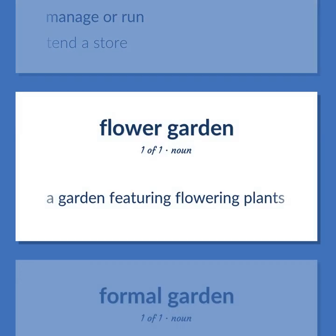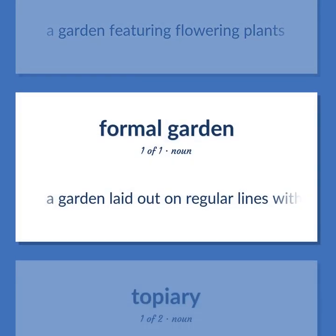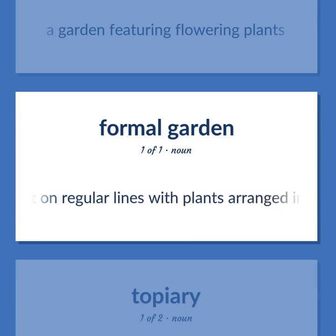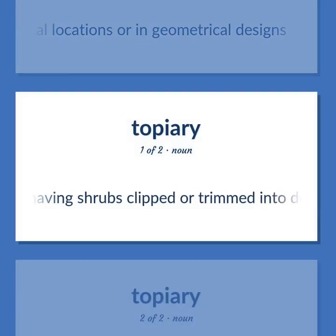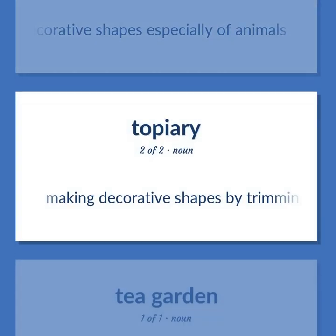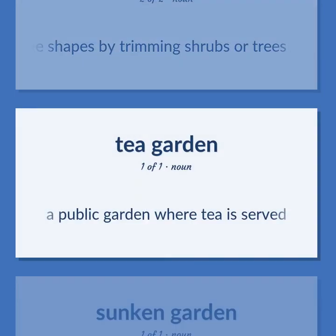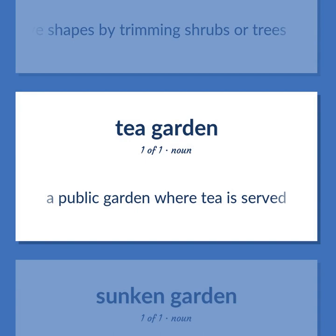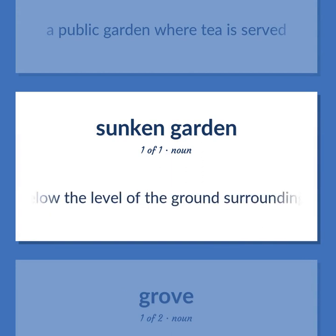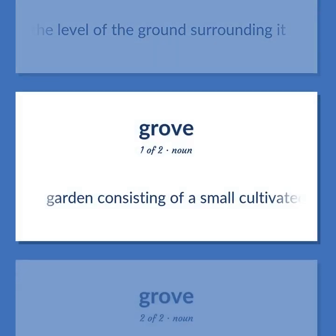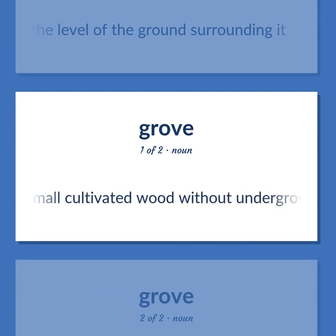A garden featuring flowering plants. A garden laid out on regular lines with plants arranged in symmetrical locations or in geometrical designs. A garden having shrubs clipped or trimmed into decorative shapes, especially of animals. Making decorative shapes by trimming shrubs or trees. A public garden where tea is served. A garden set below the level of the ground surrounding it.